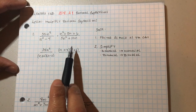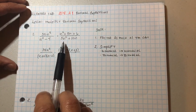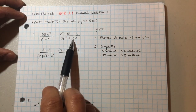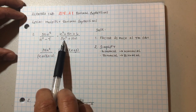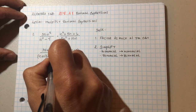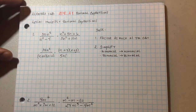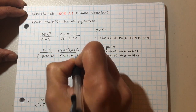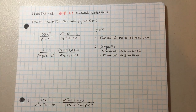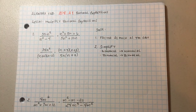Now for this expression, remember the first rule of factoring: is there a common factor? And the answer is yes. We're going to take out a five and an n, so we factor out 5n. What does that leave us inside? That's going to leave us with n plus two. So now that everything's factored, we can start simplifying.